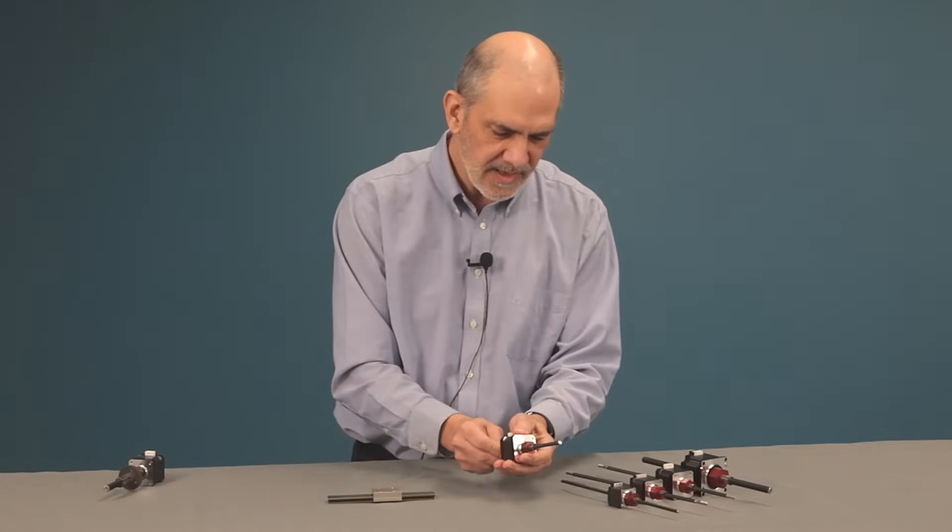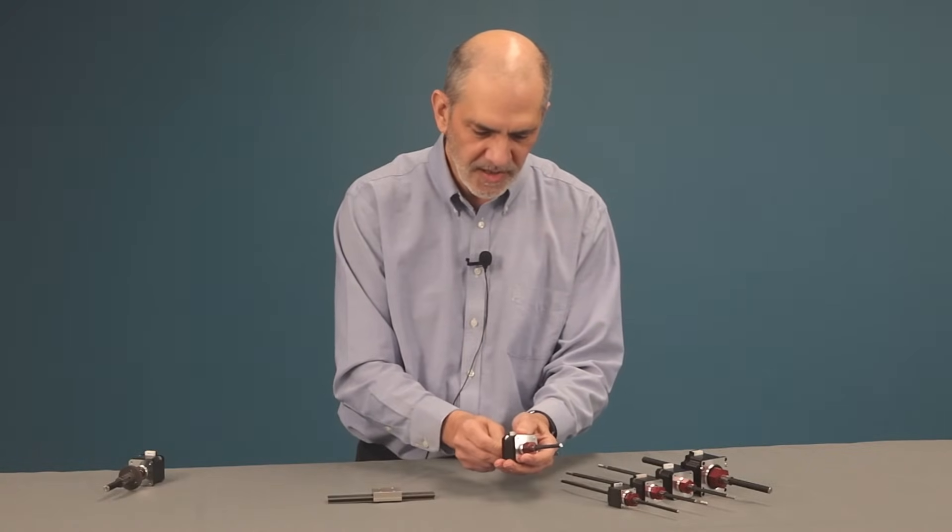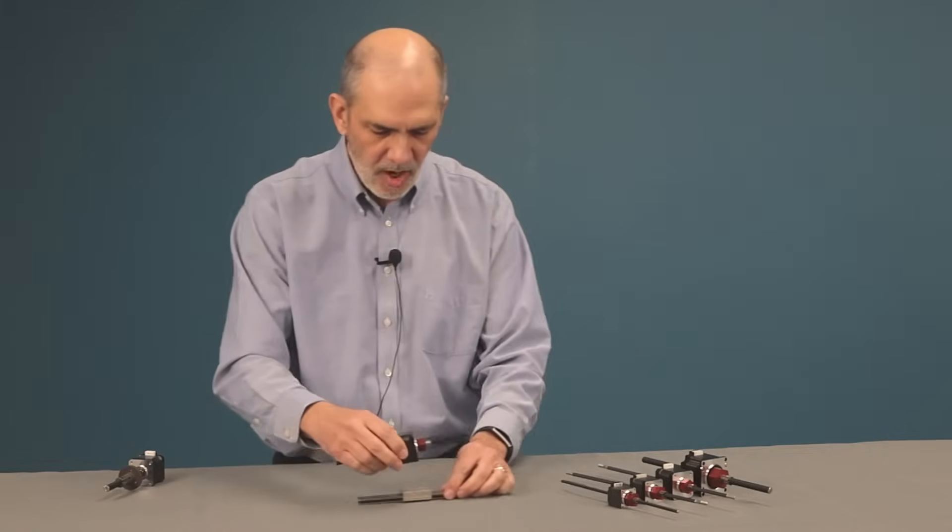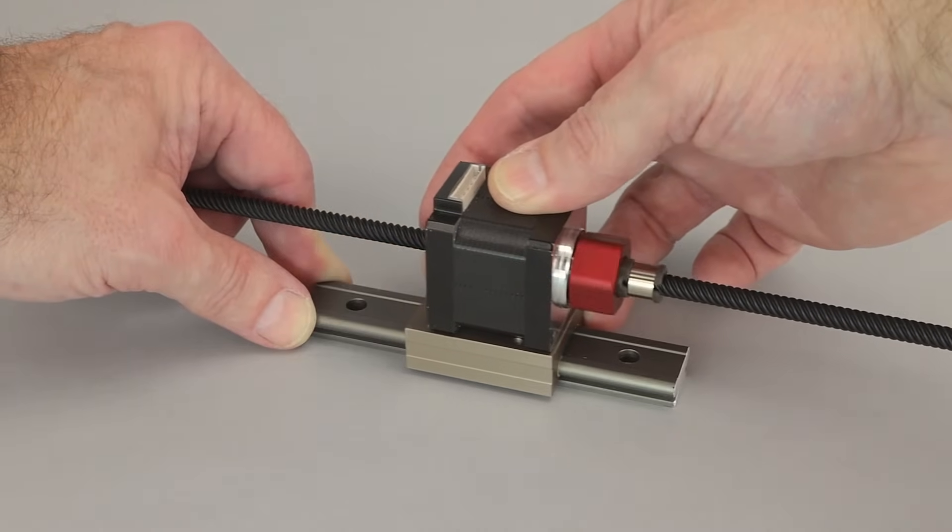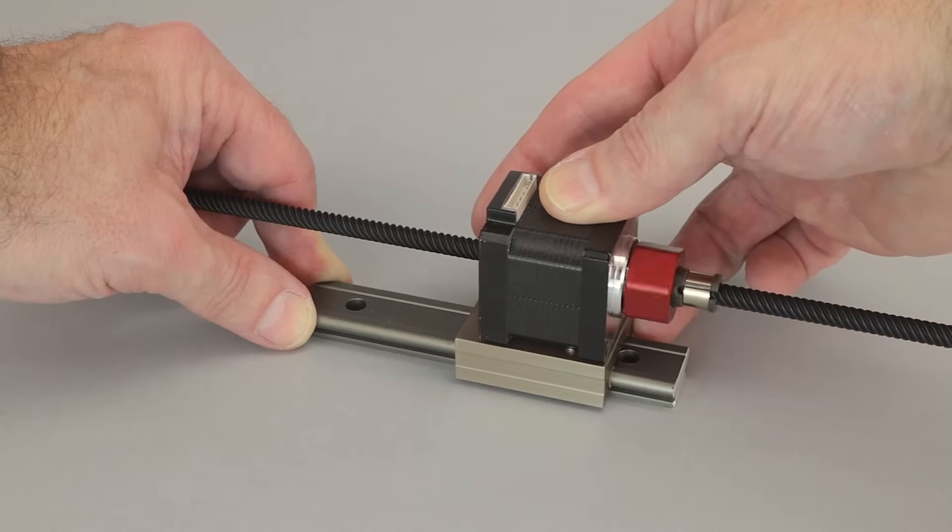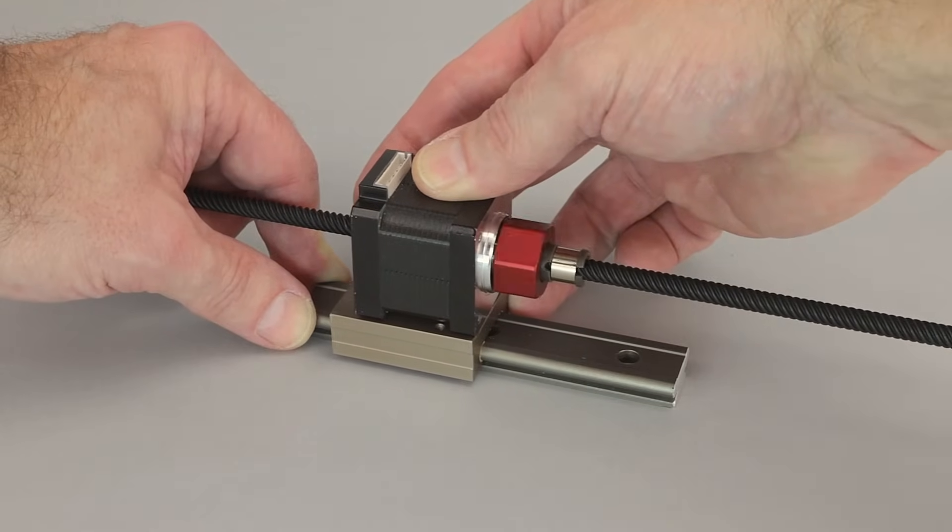You'll notice also that there's a little bit of axial motion in the screw and you'll often see these with some sort of linear guidance attached to it that will stiffen the entire assembly and increase your load capacity as well.